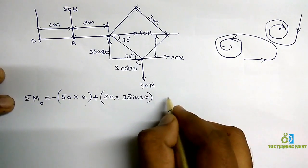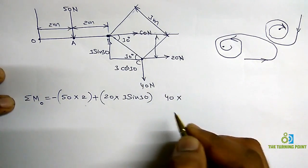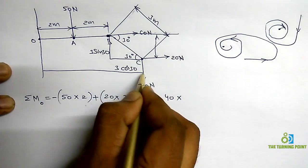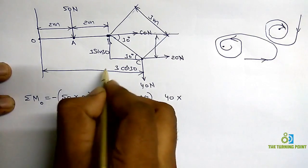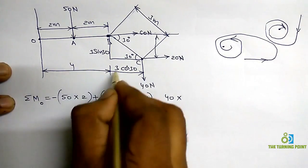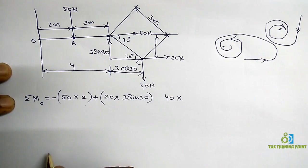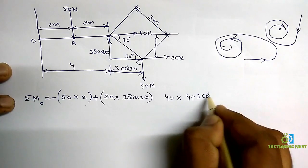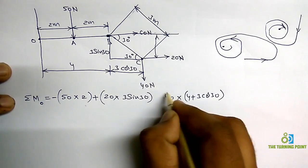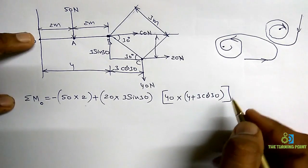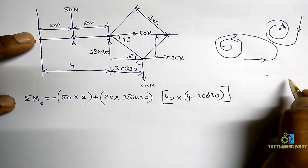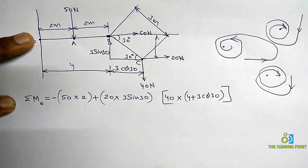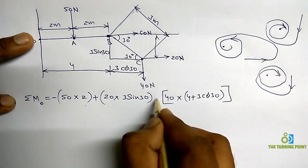Next, the 40 Newton force. 40 into perpendicular distance. Drawing a line through the moment center parallel to the force, the perpendicular distance is 2 plus 2, that is 4, plus 3 cos 30. Circling the moment center in the direction of the force gives clockwise — so that is negative.